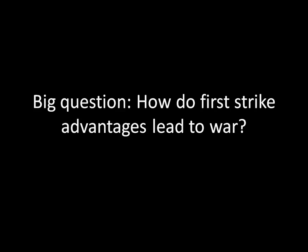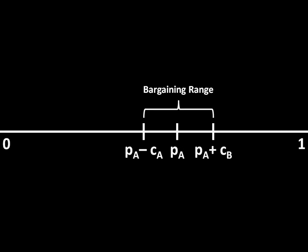Recall that as long as the distribution of power is stable and there are costs of fighting, there exists a bargaining range, and any settlement within that bargaining range is mutually preferable to war. But we've implicitly assumed that A's probability of victory, PA, does not change based on who declares war — A always wins with probability PA and B wins with probability 1 minus PA.